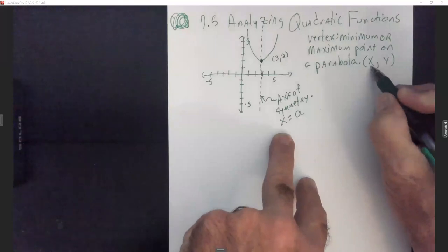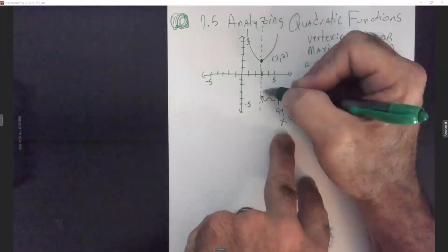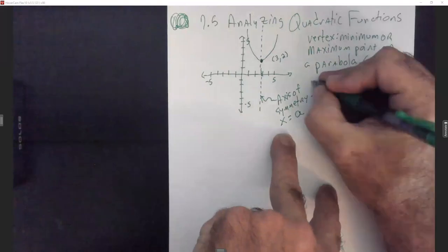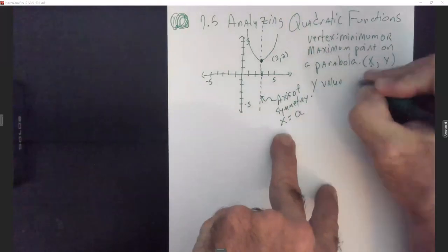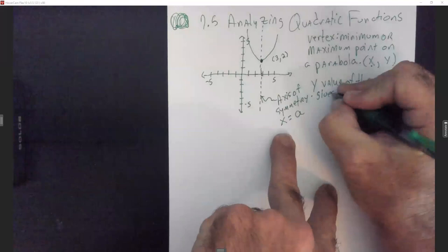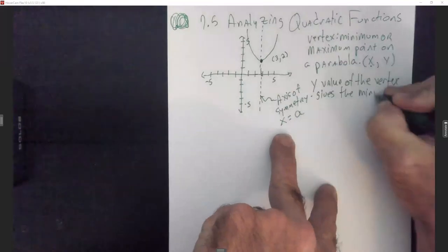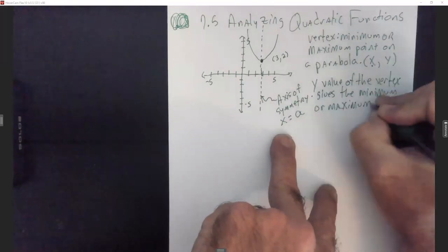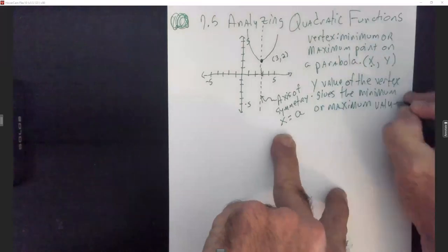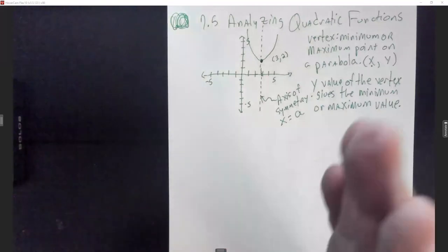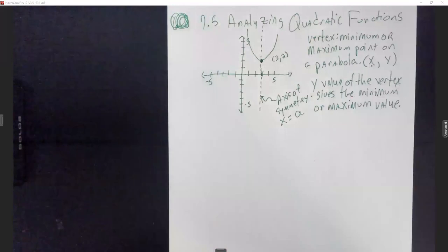That's going to be the x value where that graph is cut in half. The y value of the vertex gives the minimum or maximum value. So on the vertex, x gives me the line of symmetry or the axis of symmetry, and the y gives me that minimum or maximum value.